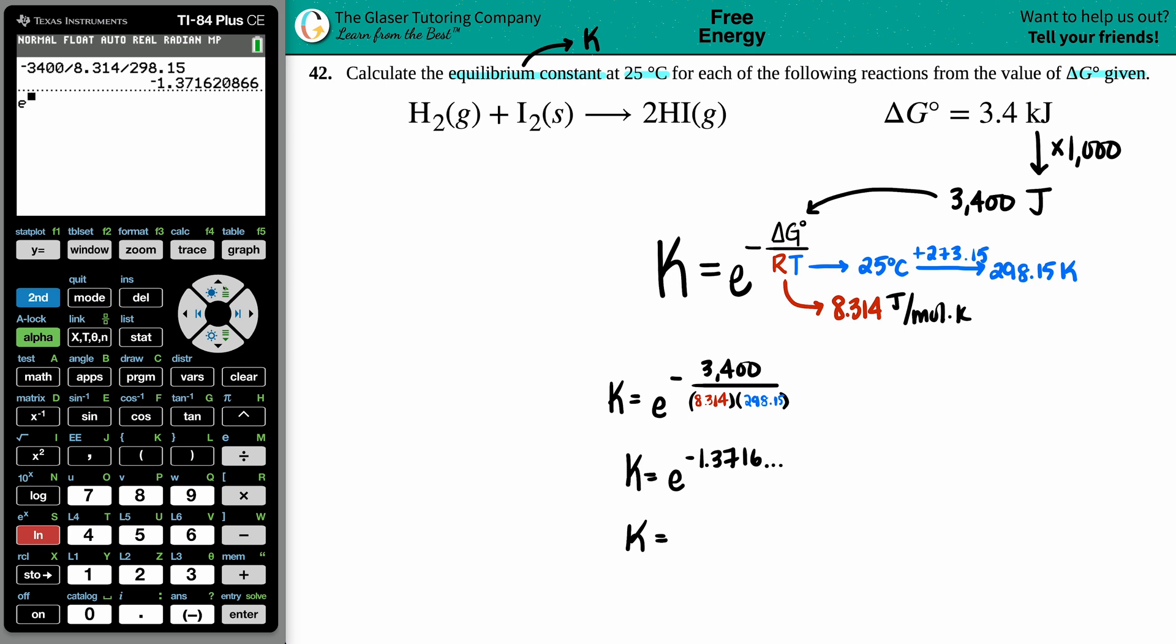I'm going to say second ln - the e button is the inverse of the natural log. I'm going to grab the whole number, press enter. This is why I love the TI-84; it just makes it so easy.